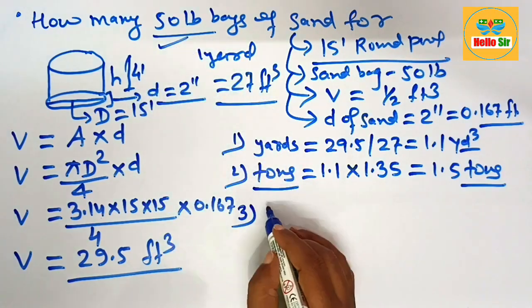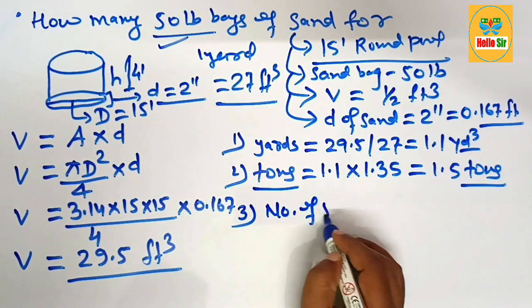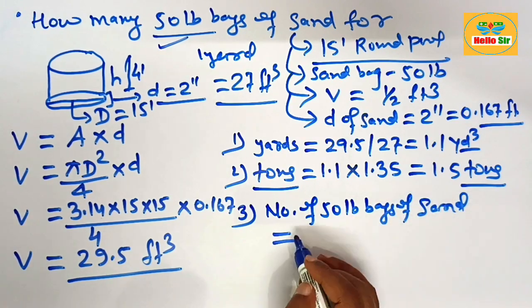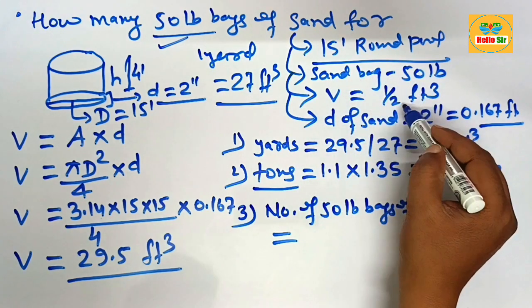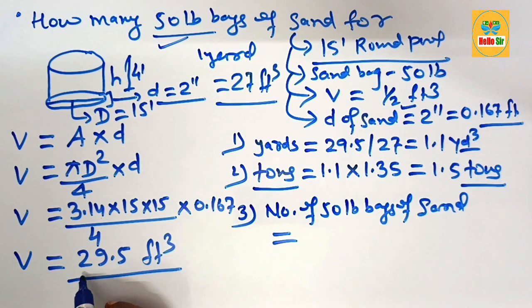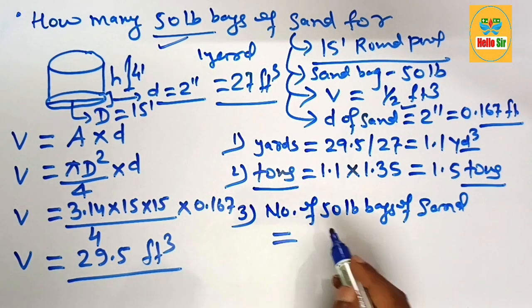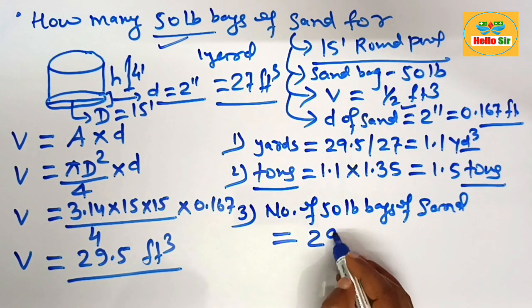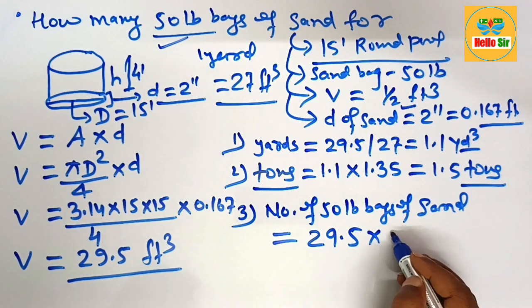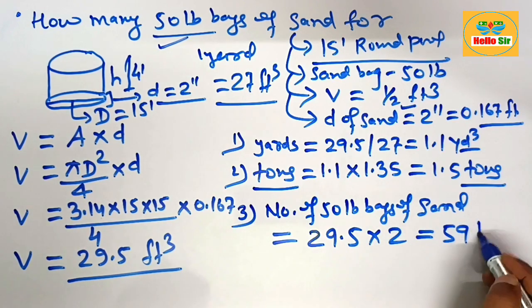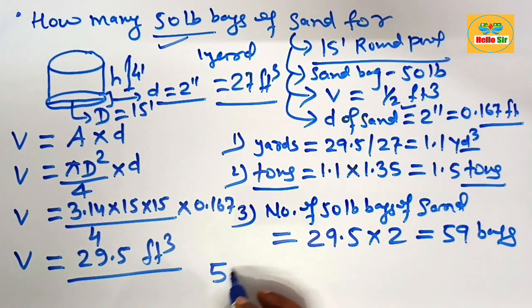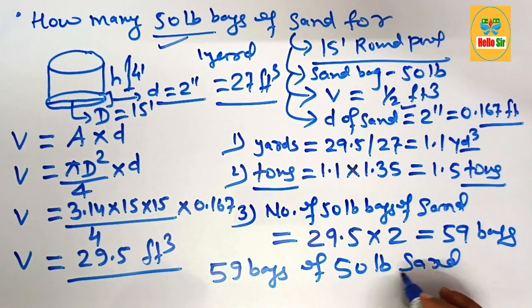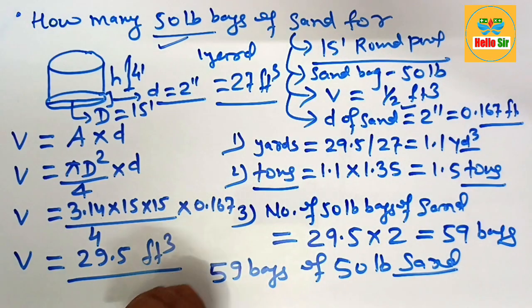To find the number of 50-pound bags of sand needed: since each sand bag yields about half a cubic foot, and you have 29.5 cubic feet, multiply 29.5 by 2. This comes out to about 59 bags — so you need to buy 59 bags of 50-pound sand for a 15-foot round pool.